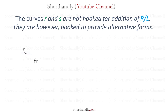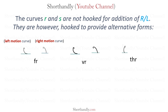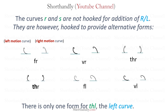For example, Fr can also be written like this. Vr can also be written like this. Ifr can also be written like this. Dr can also be written like this. Fl can also be written like this. And Vl can also be written like this. There is only one form for itl — the left curve.